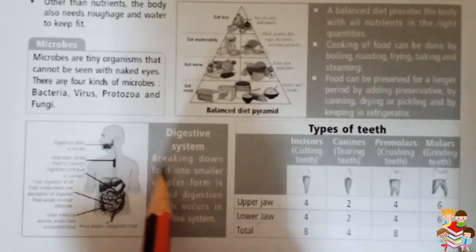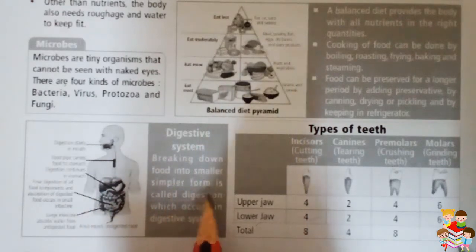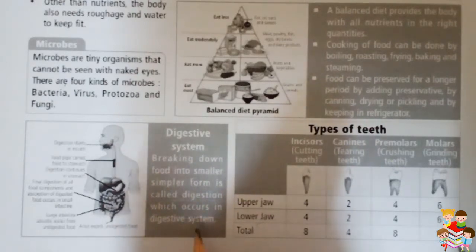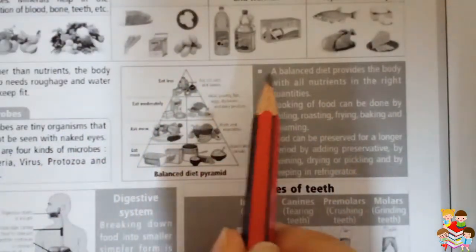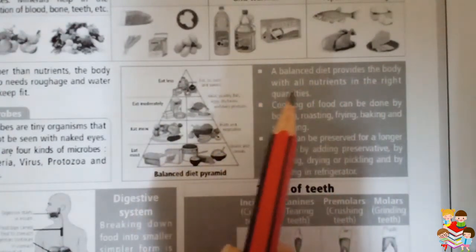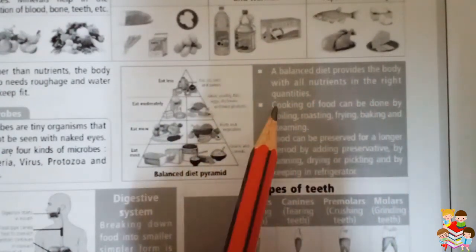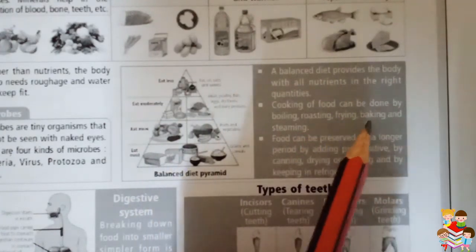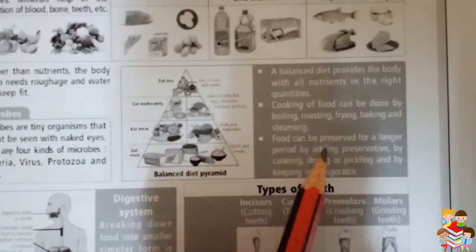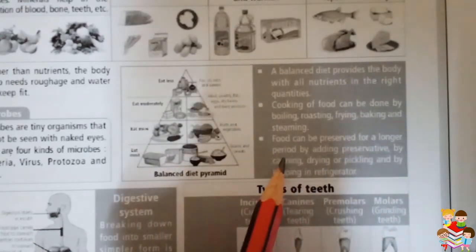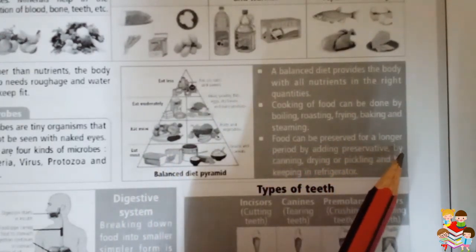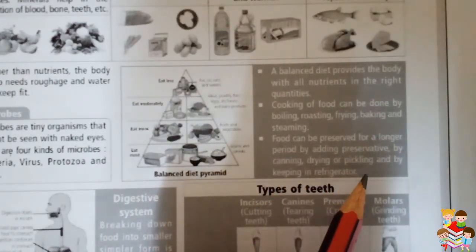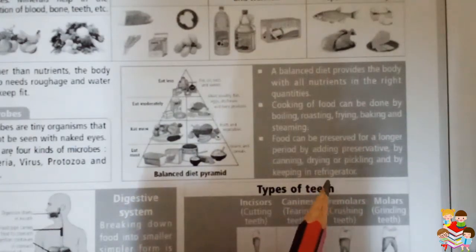Digestive system. Breaking down food into smaller, simpler form is called digestion, which occurs in the digestive system. A balanced diet provides the body with all nutritions in the right quantities. Cooking of food can be done by boiling, roasting, frying, baking, and steaming. Food can be preserved for a longer period by adding preservatives, by canning, drying or pickling, and by keeping in a refrigerator.